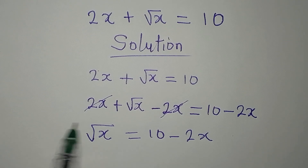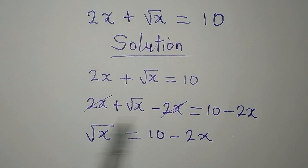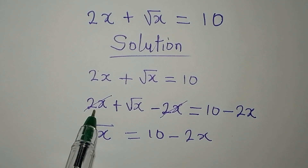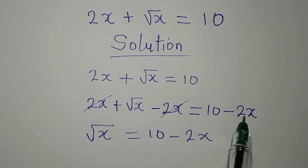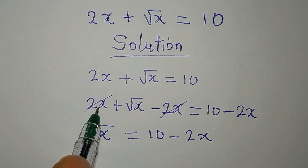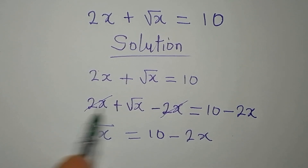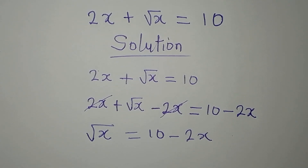What I did here is to subtract 2x from both sides. Now if it was negative 2x on the left, you will add 2x to both sides. It has to be the additive inverse of what you have on the left.